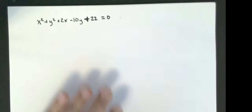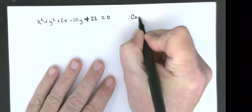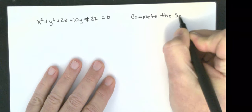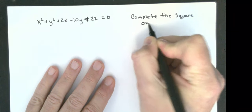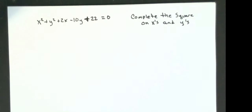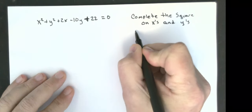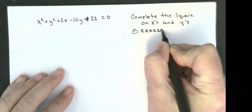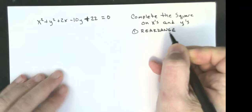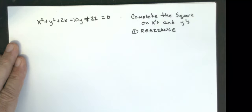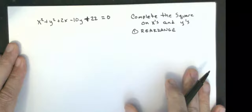What we're going to do here is we are going to complete the square on x's and y's. My first step is I'm going to rearrange. I'm going to put all the x's together. I'm going to put the 22 over to the other side. I'm going to put all the x's together. I'm going to put the y's together.